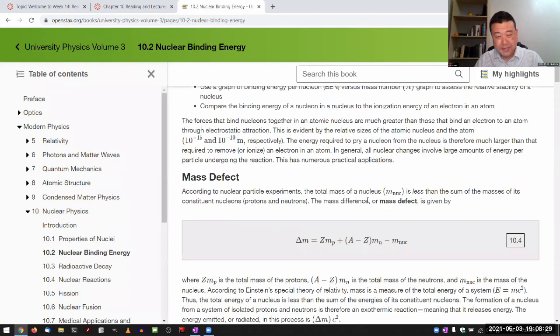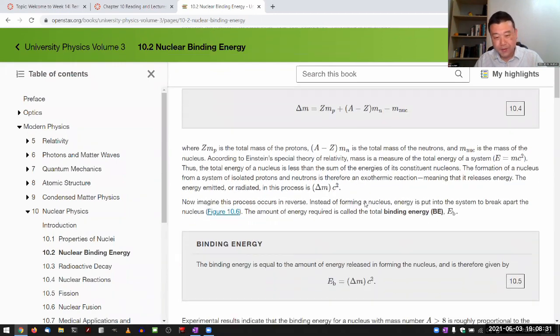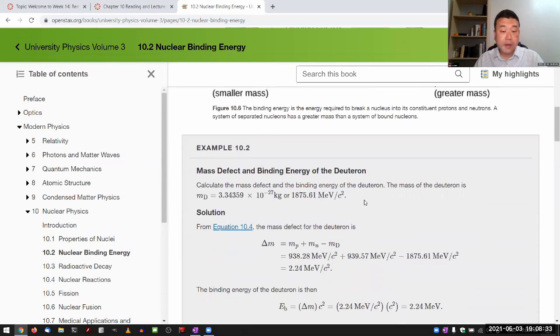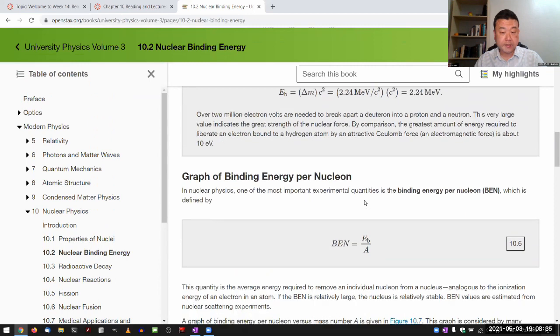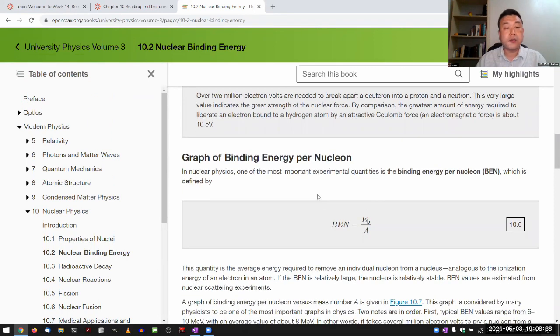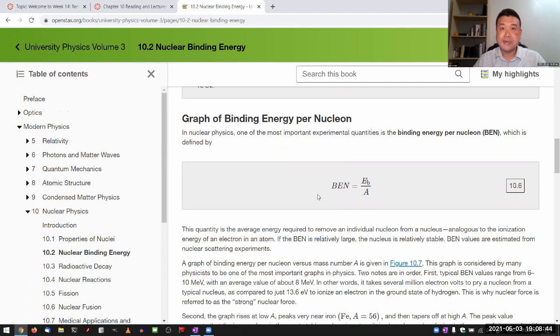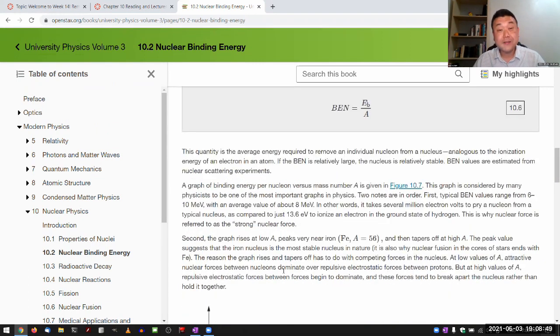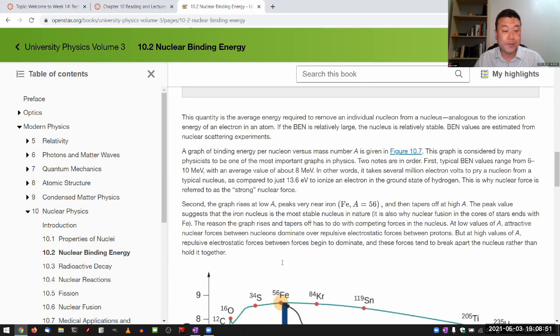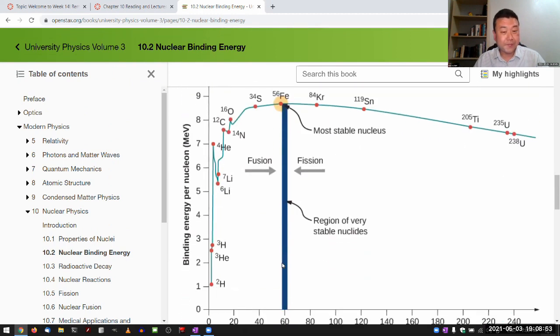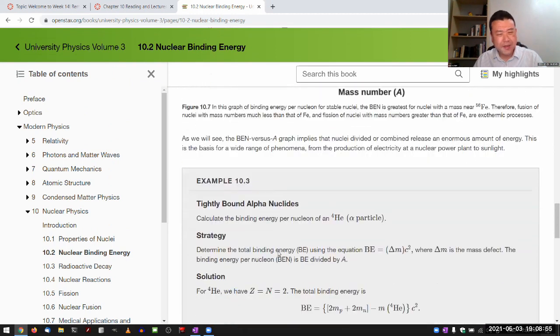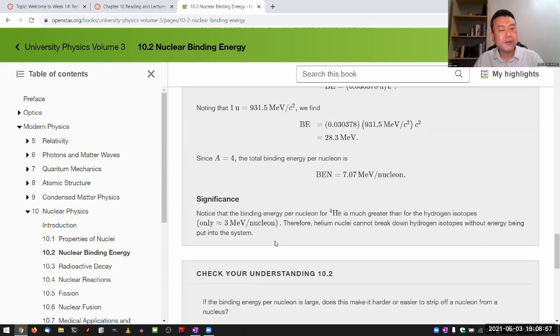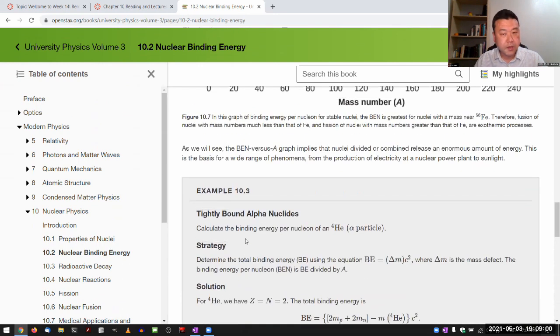We more or less skip mass defect. We don't really talk about it, but read about it so you know. One model that's sometimes used to model the nuclear energy levels works especially well for heavier nuclei with excited energy levels. You can model this as a three-dimensional particle in a box that we've been talking about. Your textbook doesn't get into that, and we're not going to either.